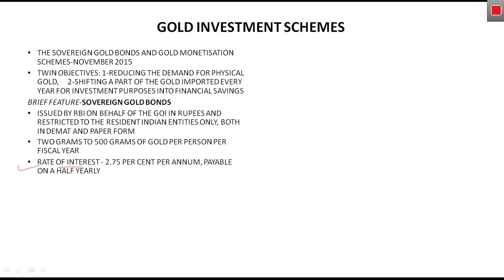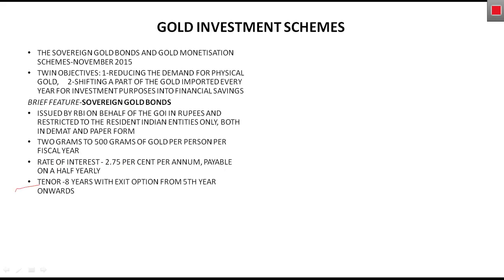Regarding the rate of interest: the data is from 2015-16, as this scheme was launched in 2015. For that year it was fixed at 2.75 percent per year. Every six months you receive the interest accumulated on your gold bond, so the annual interest rate is 2.75 percent, payable on a half-yearly basis.